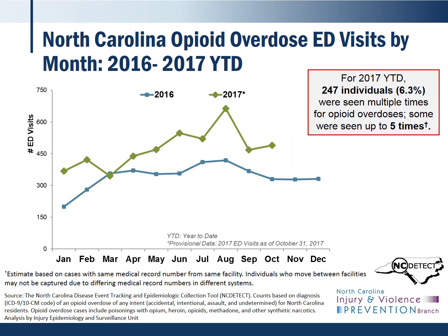Here we have 2017 year-to-date opioid diagnosis emergency department visits month to month, compared to the number of visits in each month in 2016. This opioid diagnosis is a broad definition that includes commonly prescribed opiates, heroin, and other synthetic opiates. We can see that our month-by-month totals for 2017, except for March, are much higher than what we were seeing in 2016. Using the 2017 year-to-date data, 247 individuals were seen repeatedly at the ED for an overdose, some up to five times. We believe this total may be an underestimate, since we're only able to capture repeat visits at the same facility — if an individual is seen at different hospitals, we currently aren't able to connect those visits to the same individual.